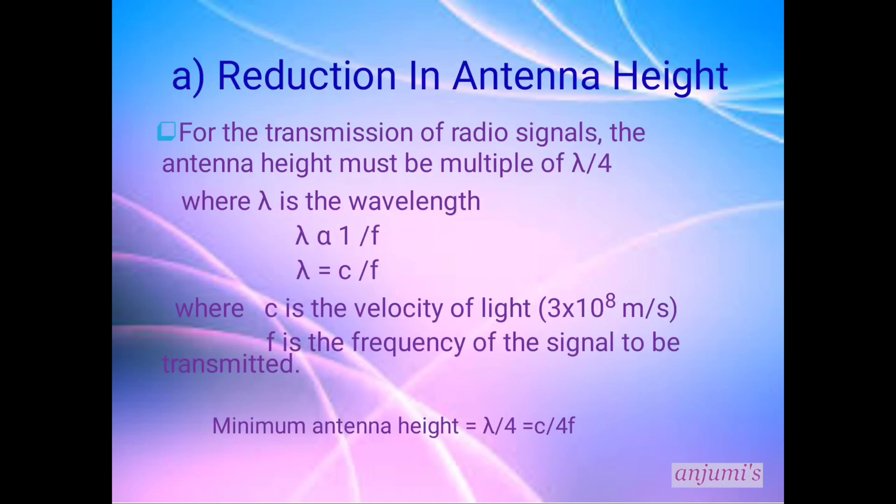First one, reduction in antenna height. For the transmission of radio signals, the antenna height must be multiple of λ/4, where λ is the wavelength. λ is proportional to 1/f, where f is the frequency of the signal to be transmitted.